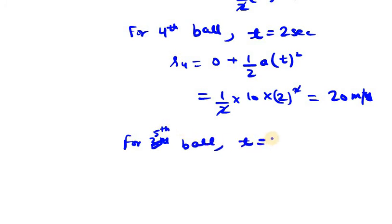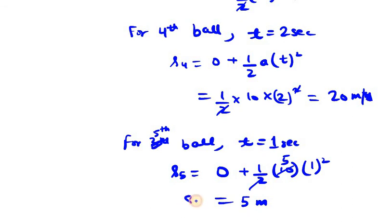Fifth ball is one second away. So it will be S5 equals, first term is 0, 0 plus half a, a is 10, t is 1. So 2 gets cancelled with 10, so it will be 5. So 5 meters. S5 is 5 meters.